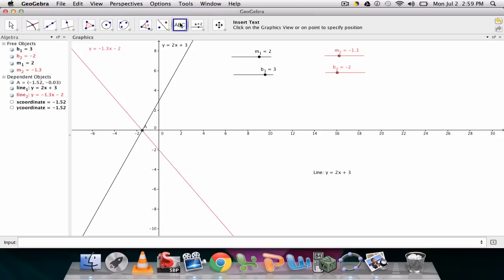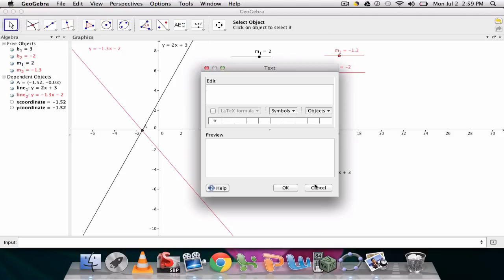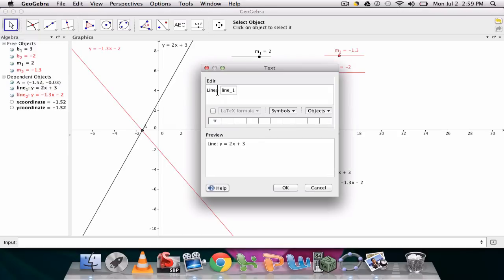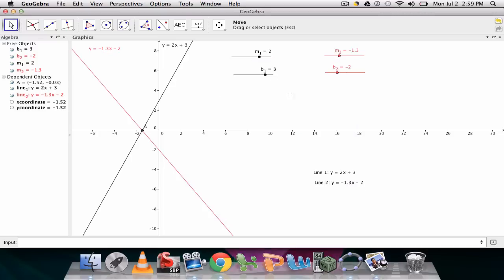I also want to create a text box for the second line. So line two. And then I click line two. And I probably want to go back to this one real quick. I should have typed line one. And there you have it. So now you have two sets of dynamic text that help you keep track of what's happening here.